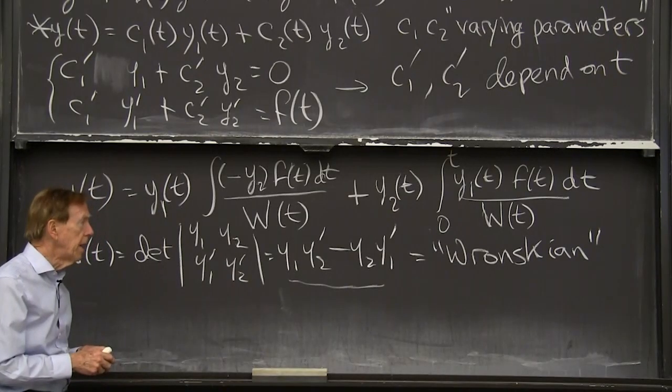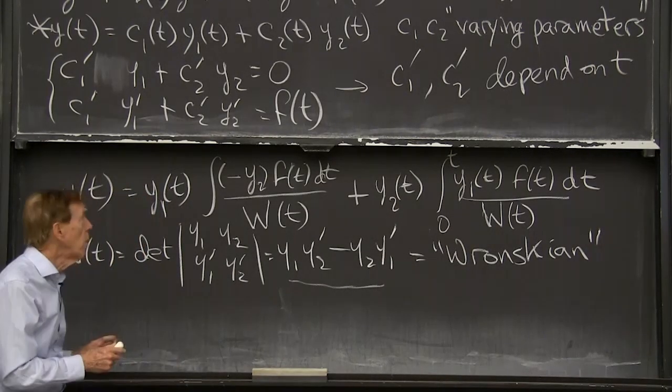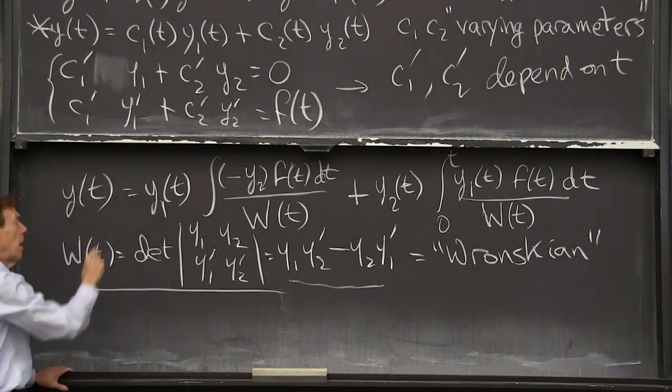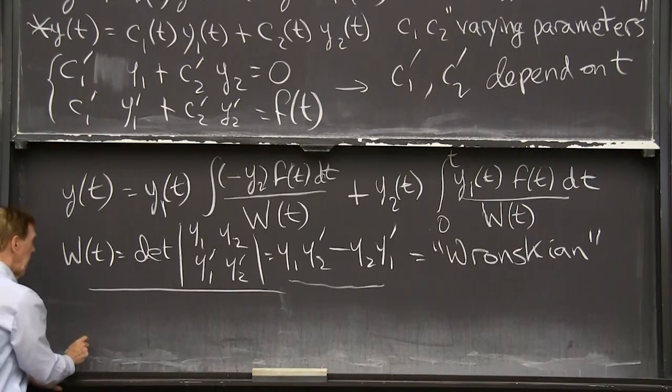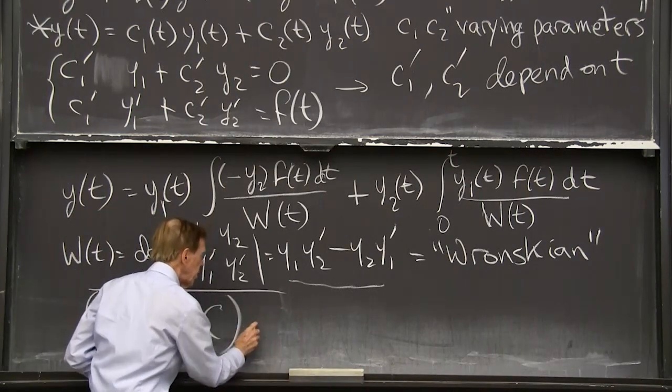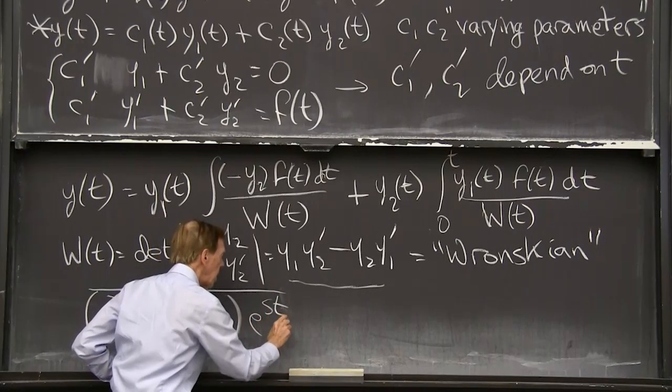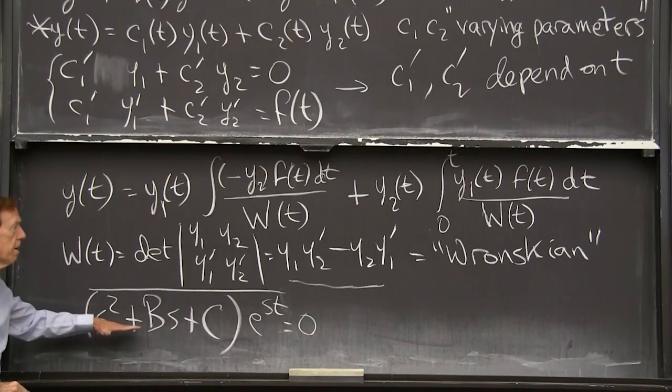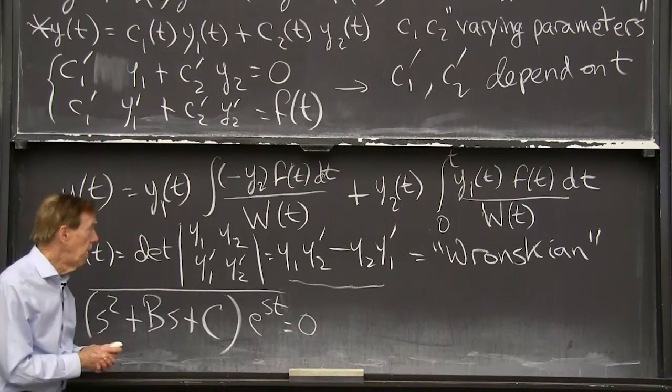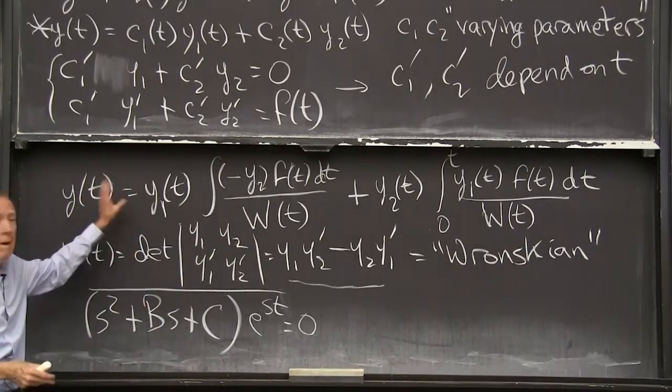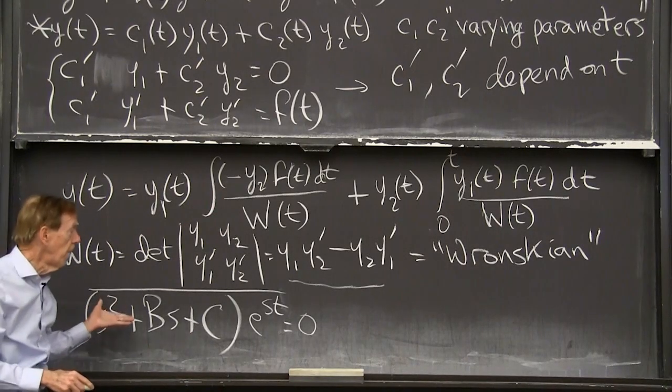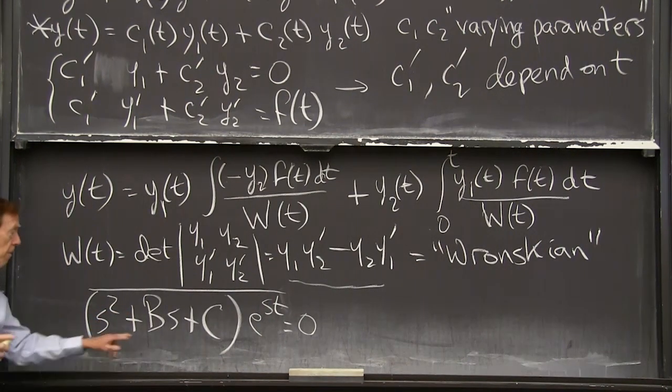So let's see. I guess my example will be constant coefficient equation. So constant coefficient, what are the null solutions for a constant coefficient equation? There. You remember what happens with constant coefficients? You plug in. You get s squared plus b s plus c times the you're trying for an exponential. And it'll work.